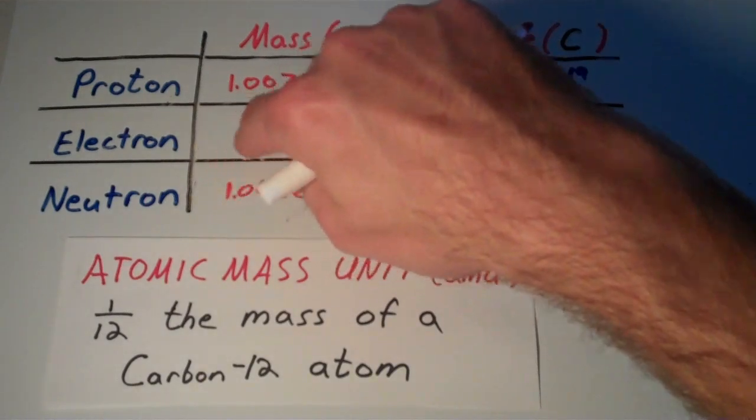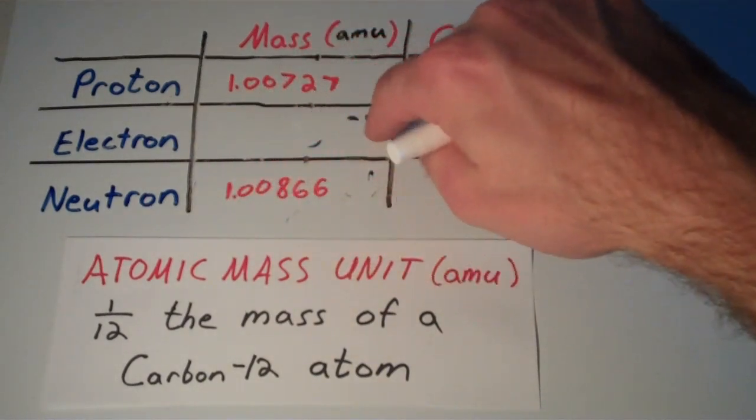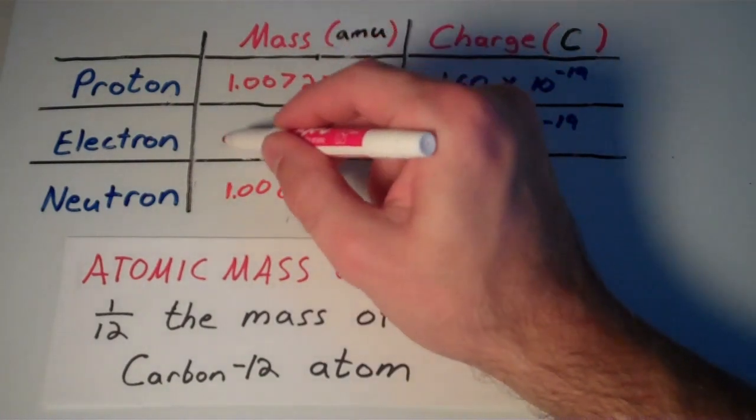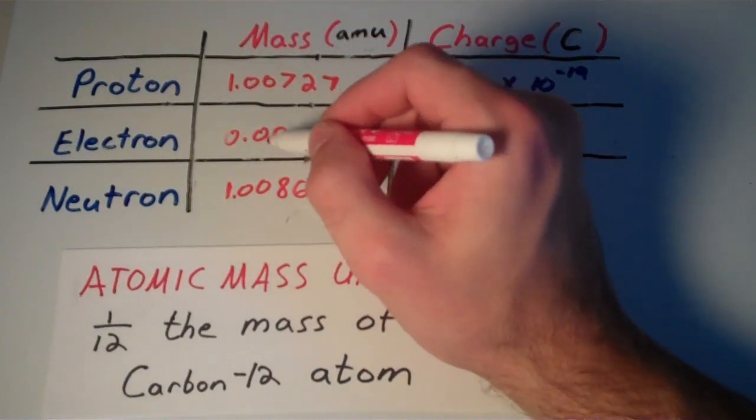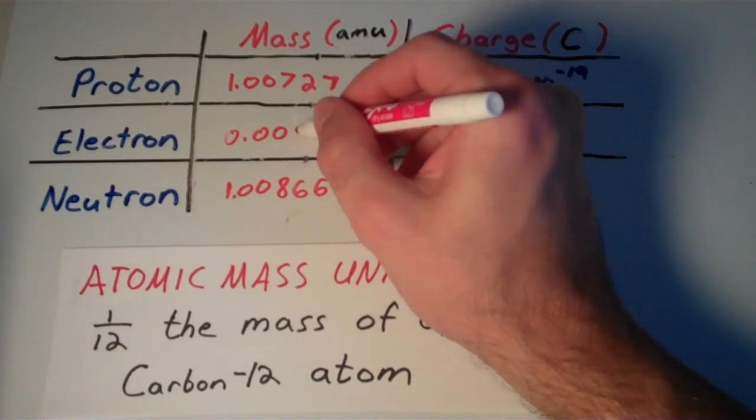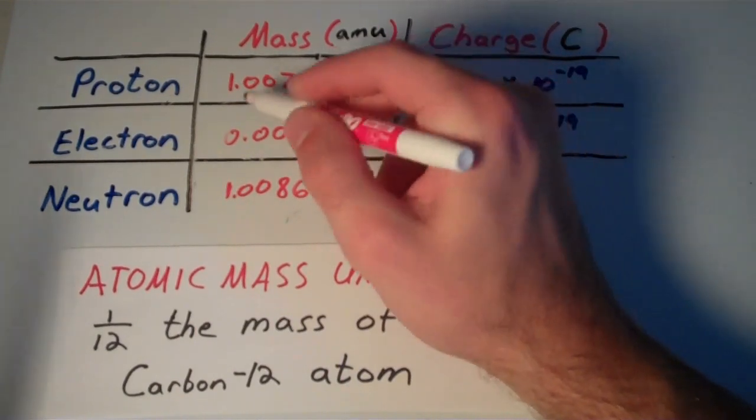But if we express the mass of the electron in AMU, we'll get a number much smaller, right? Because the mass of an electron is so small. And in AMU, the mass of an electron is 0.00055 AMU.